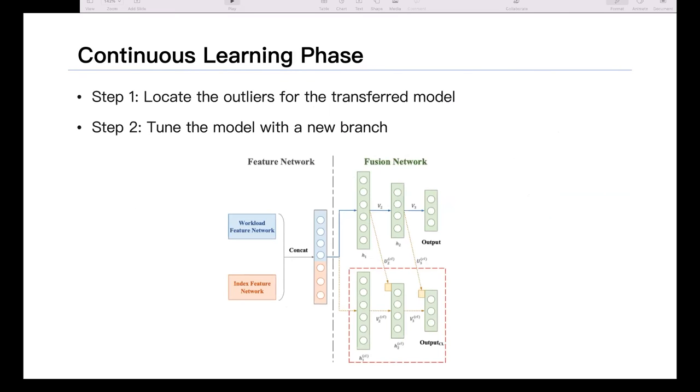This slide shows the first phase of learning on the sample database. The second phase following that is a continuous learning or incremental learning phase, where we locate the outliers for the transfer model. We tune the model with a new branch. Looking at the plot, we have a feature network followed by a fusion network, extracted from the workload feature network and index feature network after concatenation. When we do the transformation, we double up all the parameters or neural network architectures on the bottom side with a separate branch. During fine-tuning, we only train the newly initiated branch. The parameters are not shared, but initialized with the parameters trained from the sample database in the first place.